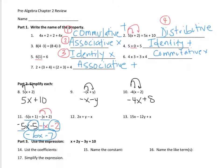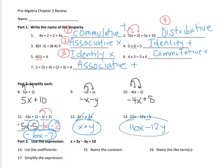Number twelve — I'm going to write a negative 1 in front, so it's going to be 2x and negative x is x, and then plus y. I can't combine these because they are not like terms. Number thirteen — I'm going to write a 1 right there, so 15x and 1x is 16x, minus 12y is the answer.